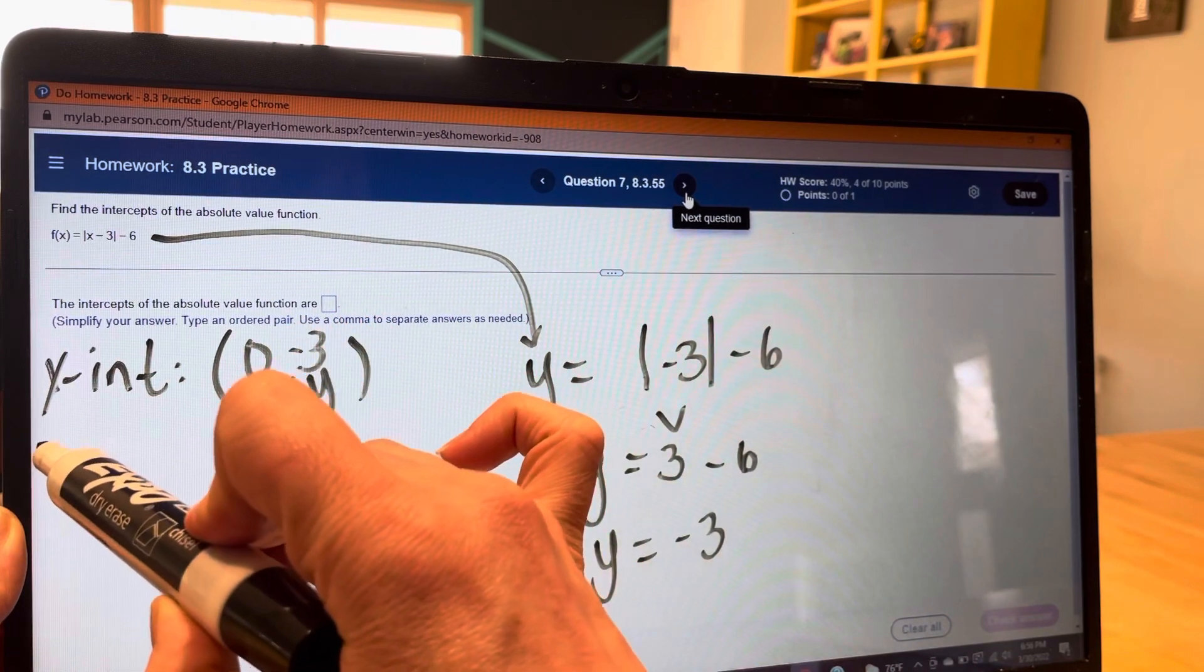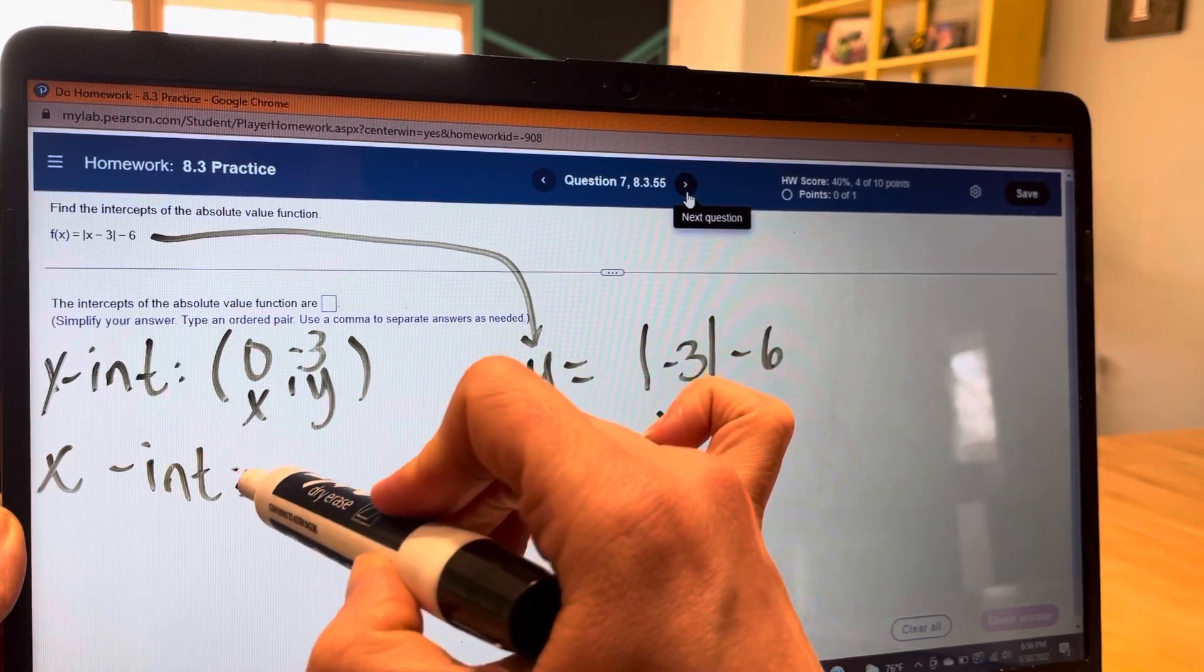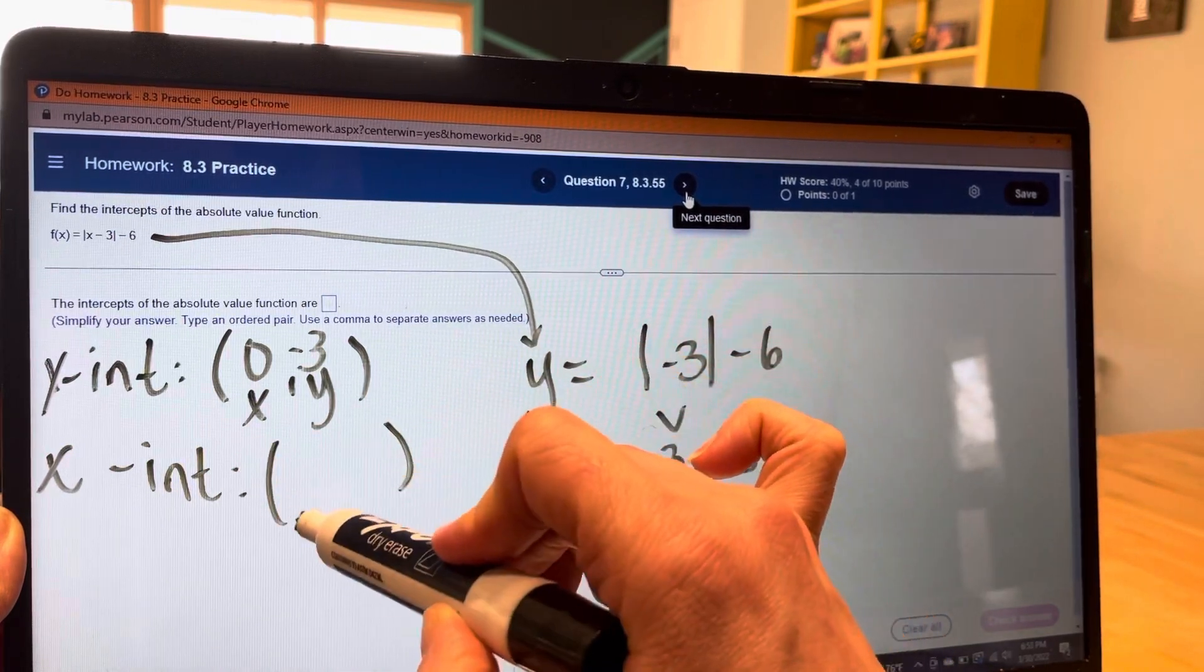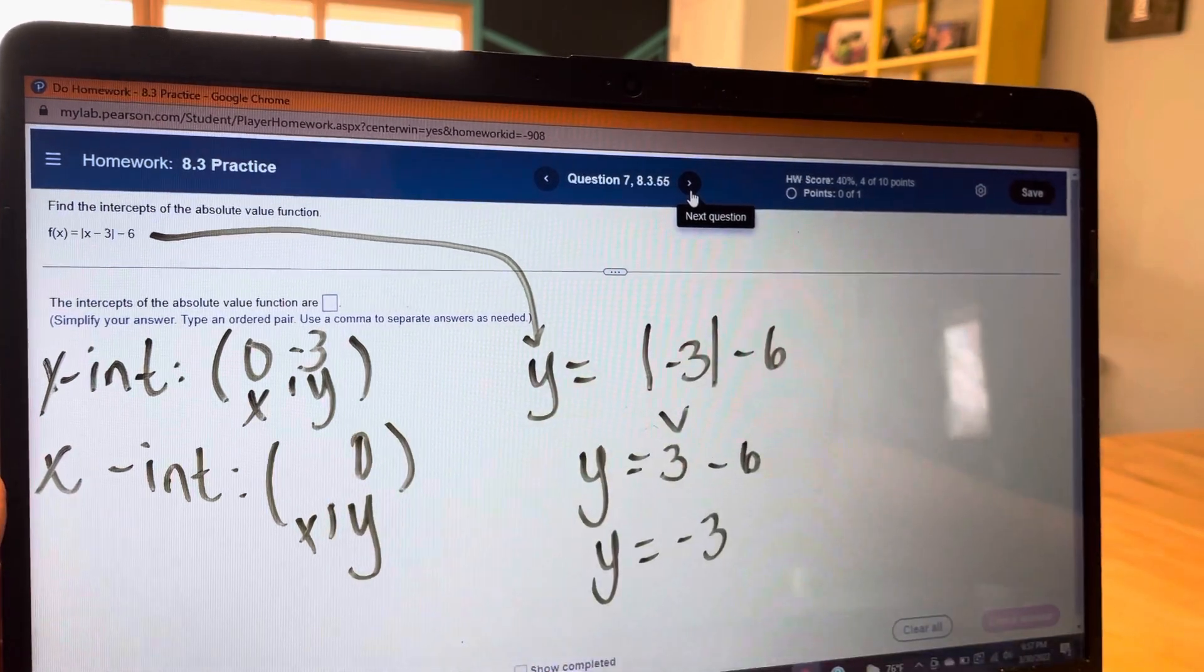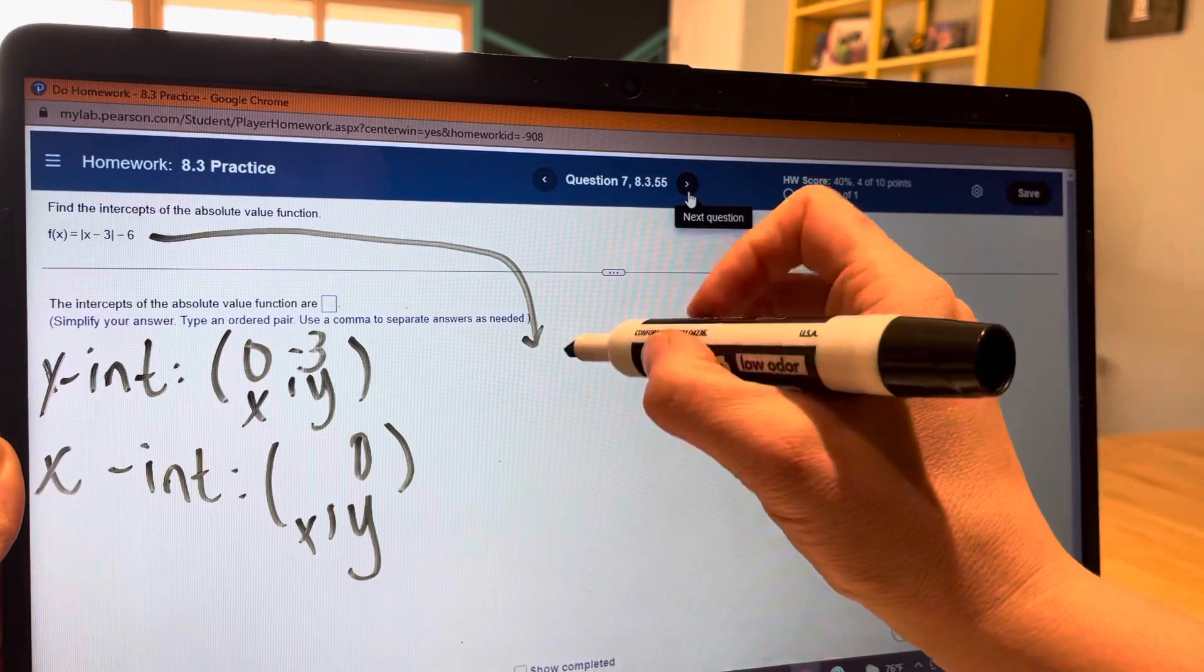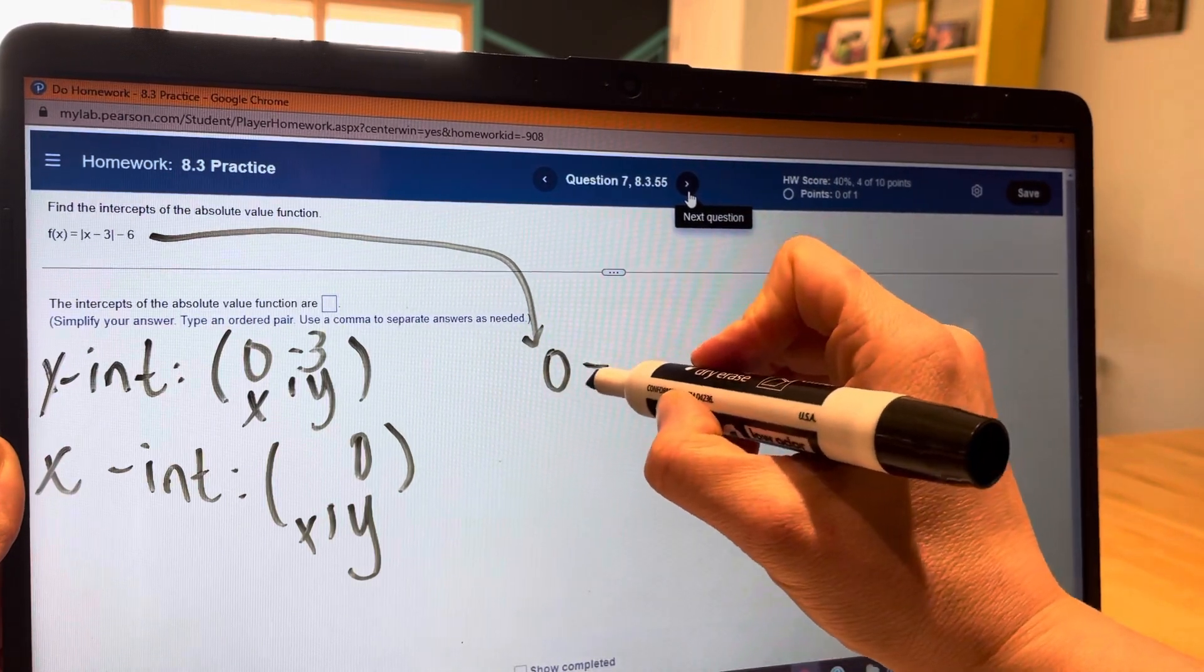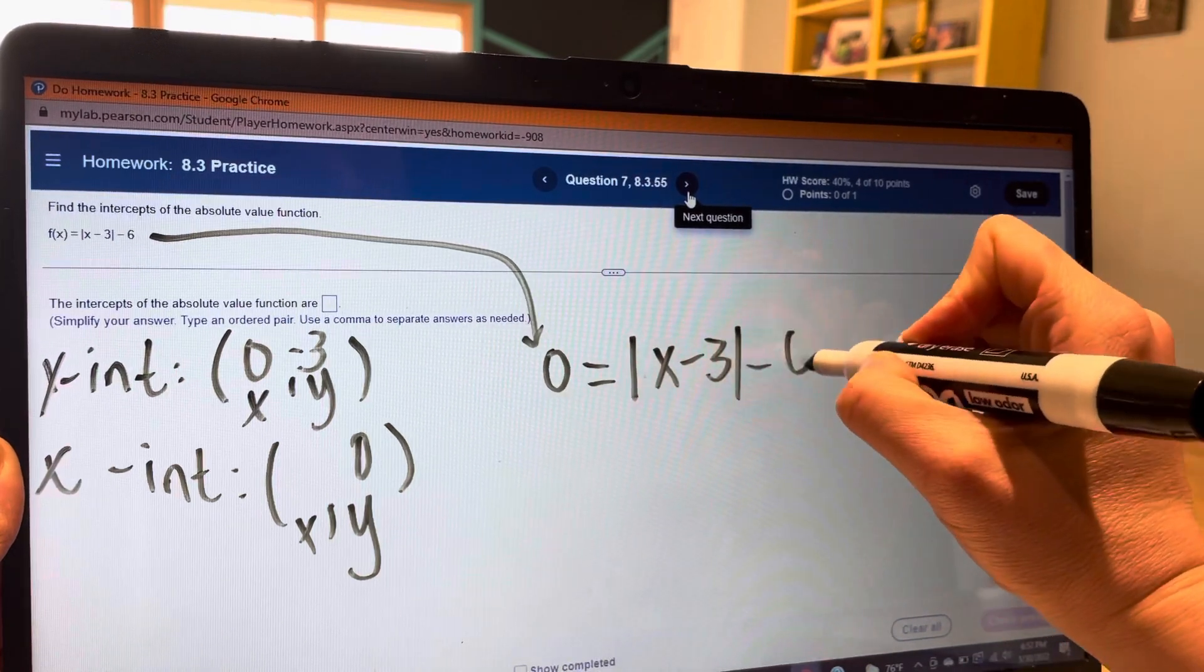Similarly, for the x intercept, we're going to plug in a 0 for the y. And then we actually have to solve for the x. So I have 0 equals absolute value of x minus 3 minus 6.